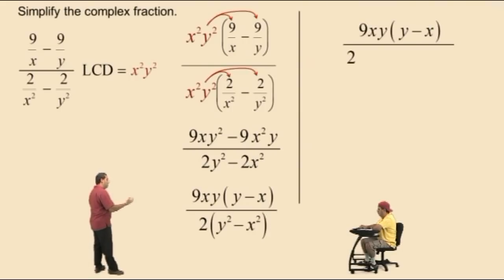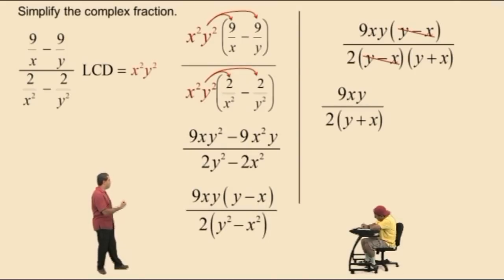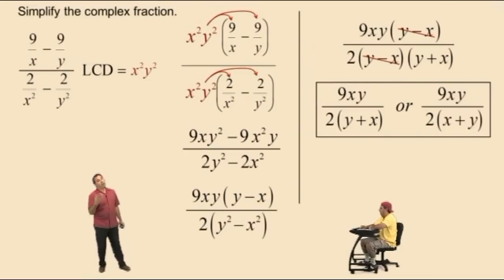And now Charlie, how do we factor y squared subtract x squared? y subtract x times y plus x. Very nice there Charlie. And notice our y subtract x's cancel, leaving us with 9xy over 2 times the quantity y plus x, which is equal to 9xy over 2 times the quantity x plus y. And don't forget to circle or box your answer.